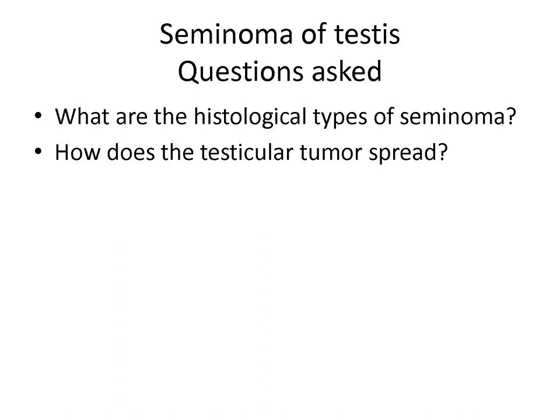One anatomical-based question can be about the spread of testicular tumors. You should know about the lymphatic drainage of the testis. Seminoma commonly spreads by lymphatics. The first echelon of lymph nodes are in the para-aortic region at the level of the renal veins. There is a free crossover of lymphatics from the right to the left and later to the mediastinal nodes and then to the left supraclavicular lymph node. Direct spread of tumor is very late because it is confined by the tunica albuginea. Direct spread can occur along the epididymis and the spermatic cord, and scrotal invasion is very rare.